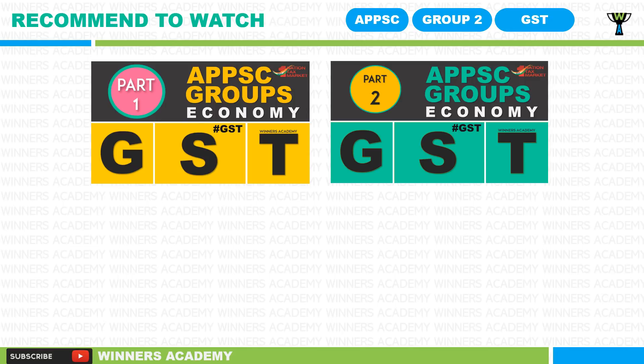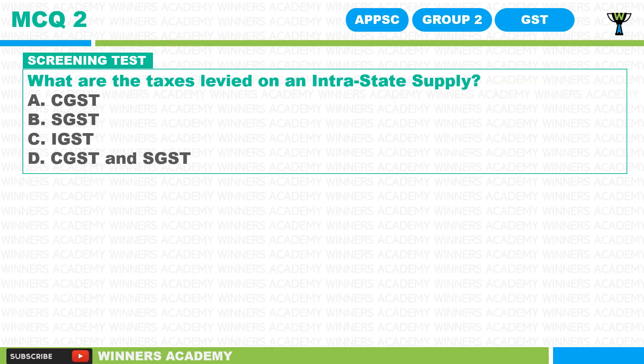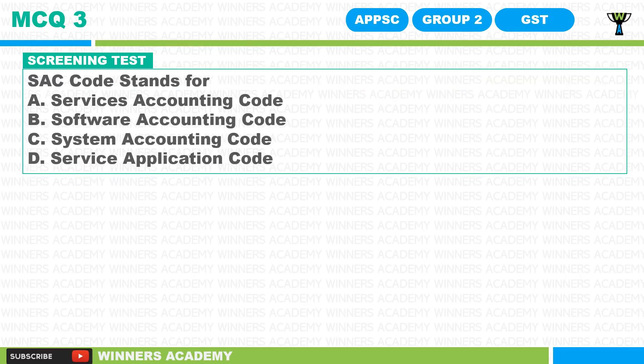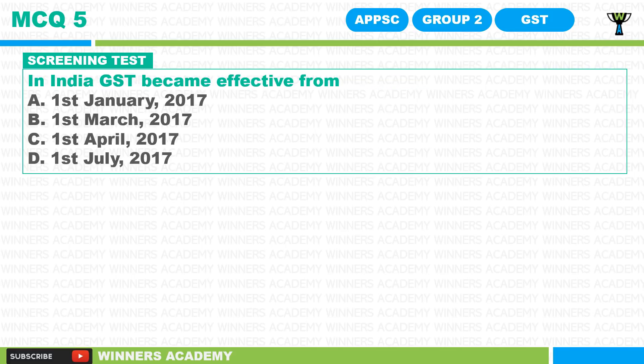This video will be available for a mock test directly. Part 1 and part 2 will be easy. MCQ 1: GST is a destination-based tax on consumption of goods and services. What are the taxes levied on an intrastate supply? Indian GST model has which type of tax rate structure? GST became effective from which date?